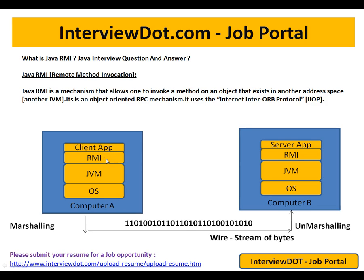Whenever the client application invokes a remote method, for the client application it looks like a proxy — it looks like a local method. But RMI plays an important role to pack the client application's object state; it will actually serialize it.